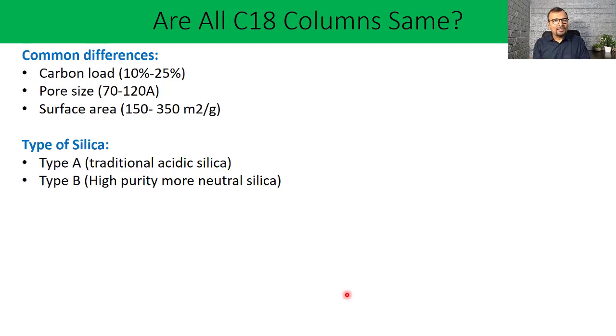You can also think about the different types of silica. Type A, which is traditional silica, is slightly acidic and has a good amount of metal impurities, which is not preferred for basic compounds as it can result in tailing. Now the high purity silica, which is Type B silica, also called near-neutral silica, is much preferred for analysis of basic compounds because it will not have the silanol effect as in Type A silica. So these are common differences, but we are going to talk about something else.